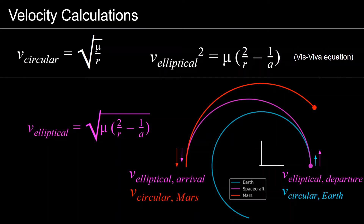First, we need to know the velocities of the planets and the velocity of the spacecraft in its transfer orbit when it is departing Earth and arriving at Venus or Mars. Since we're assuming that the planets are in circular orbits, we can find their constant velocities with the simple equation of circular orbits: the velocity of a circular orbit is equal to the square root of mu — the gravitational parameter of the central body, in this case the Sun — over r, where r is the constant distance from the Sun to the planet.